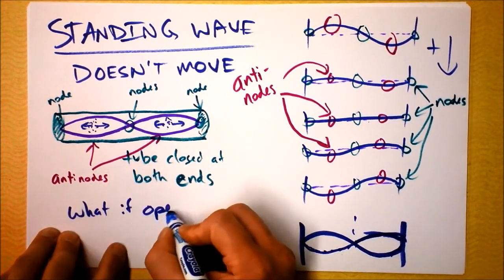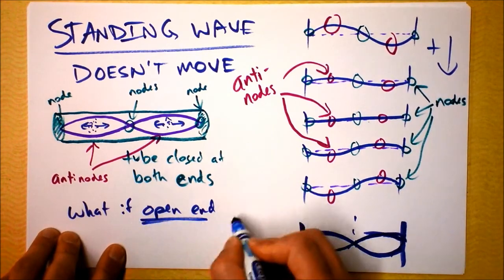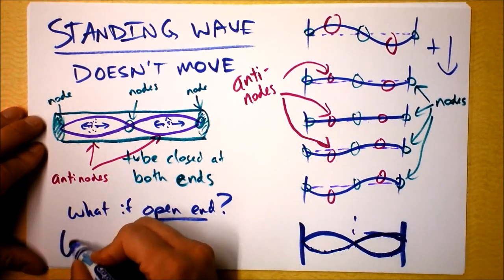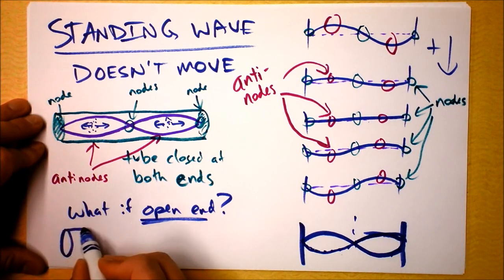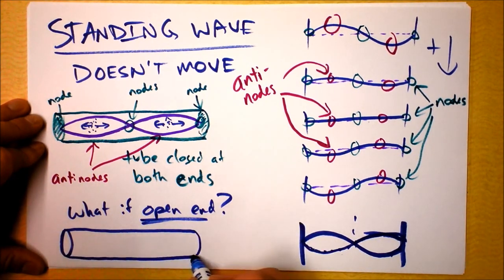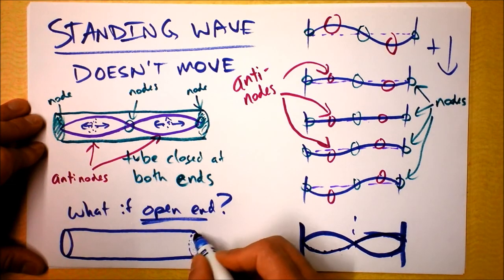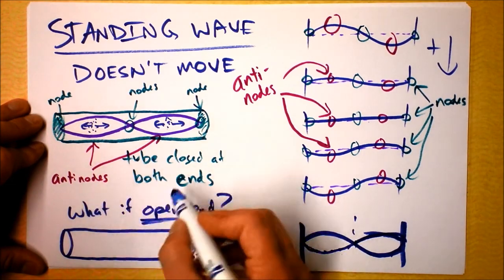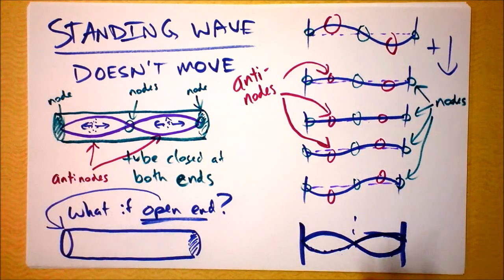What if open end, right? That's the big question. So here I'll draw a tube that has an open end and comes back and the other end will be closed. I'll make this the closed end here. What if open end, there, that's our question.